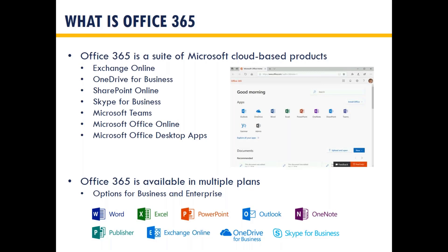OneDrive for Business is Microsoft's personal file storage solution. SharePoint Online is used for file storage in more of a team setting and can be used as a company-wide intranet to distribute data. There's also Skype for Business — your instant messaging, online meetings, and video conferencing tool. Skype for Business is actually going away and being replaced with Microsoft Teams. We'll touch on both because both are still being used. Microsoft Teams includes additional features like file storage and sharing between group members, and starts to integrate other systems in Office 365 into a single application.